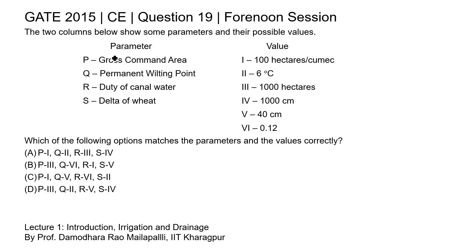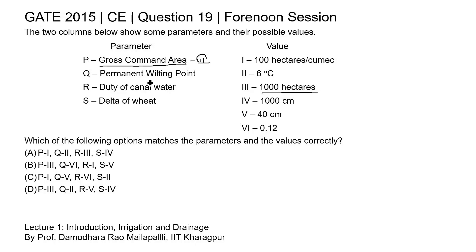Now matching the parameters to values. The first parameter is gross command area, which is measured in hectares. Looking at column 2, the values given in hectares are 300 hectares and 1000 hectares. So the correct match for P (gross command area) is 3, corresponding to 1000 hectares.